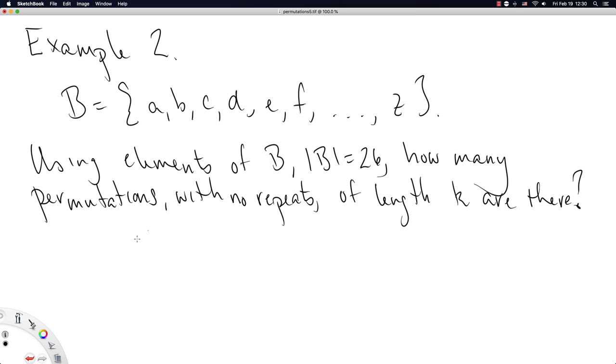We know that there's 26 elements in the English alphabet. So we could imagine this is like 26 times 25 times 24 times 26 minus k minus 1.